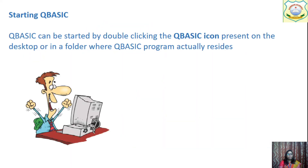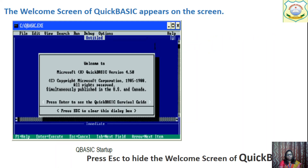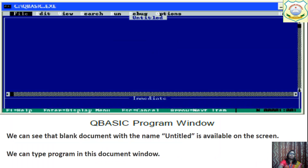How to start Q-Basic? Simply double-click on the Q-Basic icon present on the desktop or in the folder. This is the first screen — the welcome screen that comes in front of you. Press Escape and you will get the next screen. This is called the Q-Basic program window.